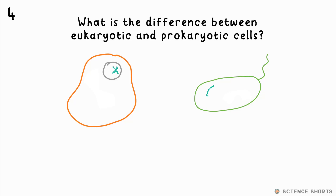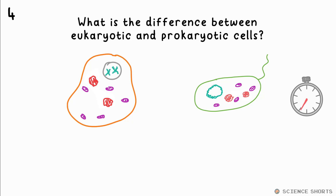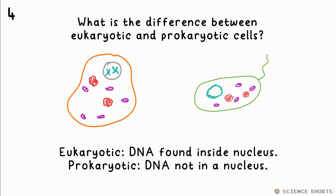Question 4. What's the difference between eukaryotic and prokaryotic cells? Eukaryotic cells, like your normal plant and animal cells, have their DNA found in the nucleus. For prokaryotic cells, like bacteria, even though they have DNA, it's not found in a nucleus — they don't have a nucleus at all.